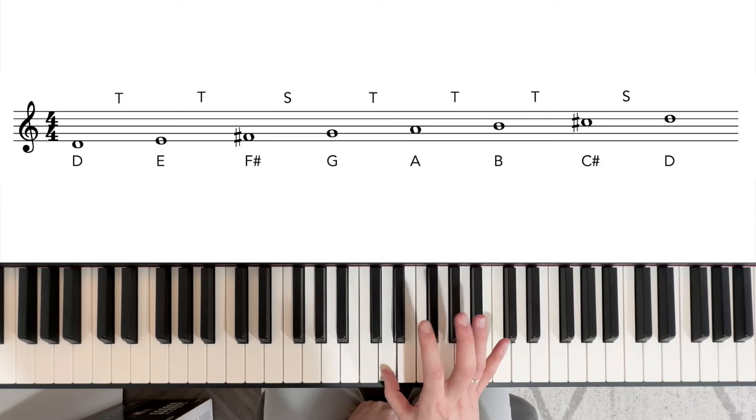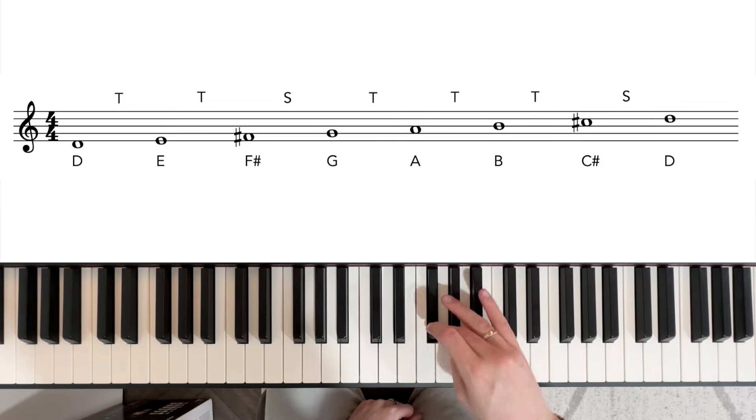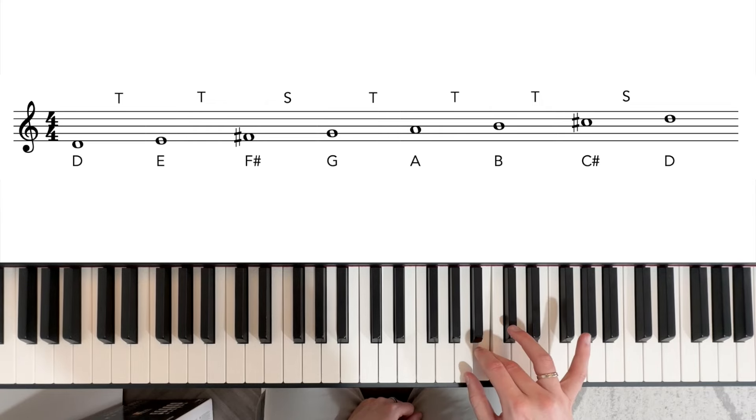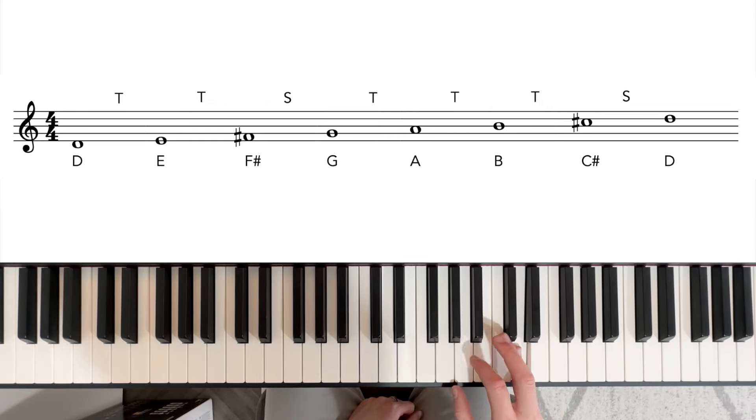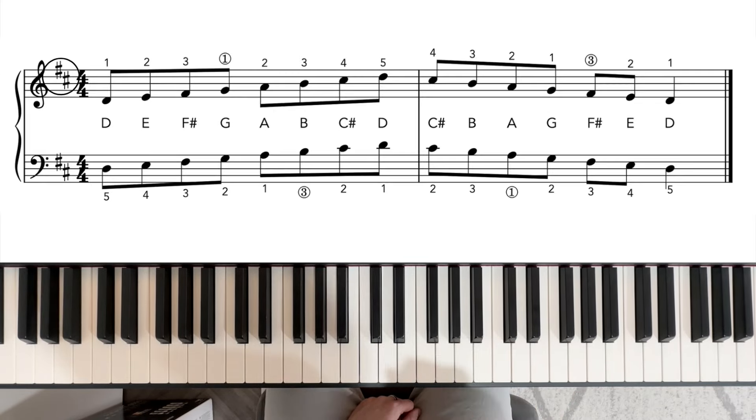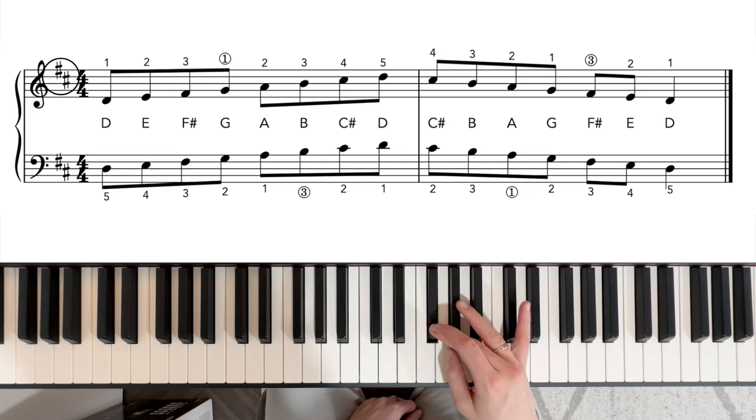So the two sharps of D major are F sharp and C sharp in this order. So D, E, F sharp, G, A, B, C sharp, D. And this is the D major scale. The fingering is identical to the previous scales, C and G, so we start 1, 2, 3, then a crossing under 1 on the G.